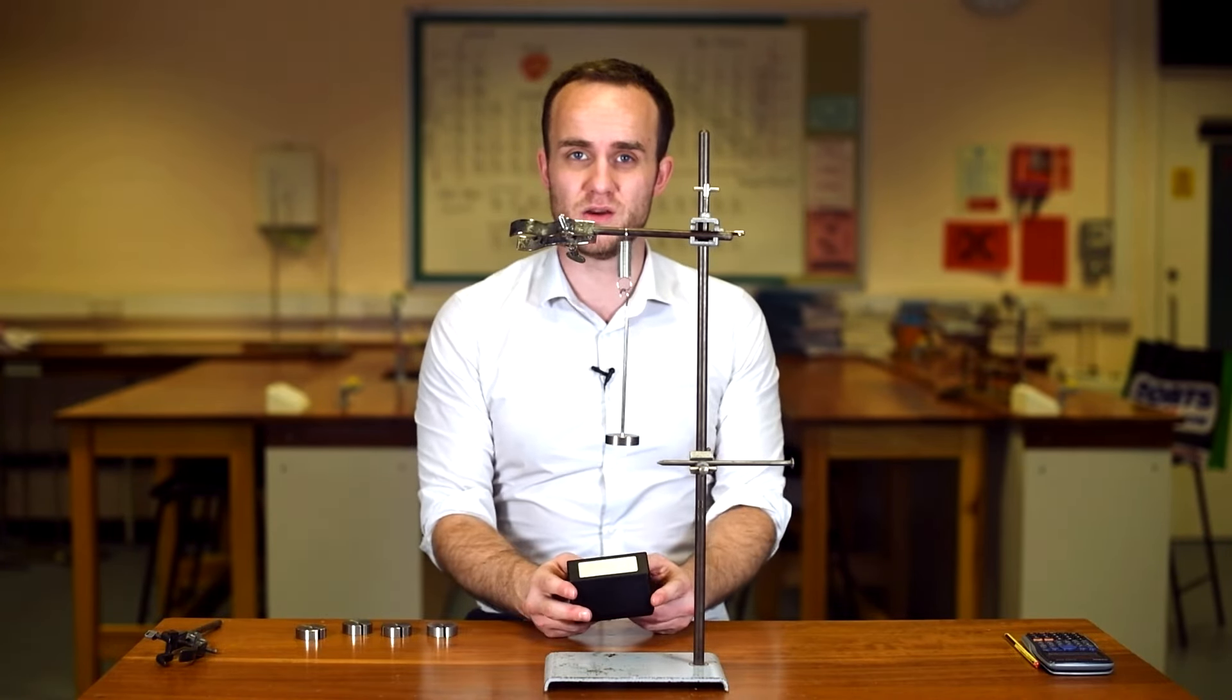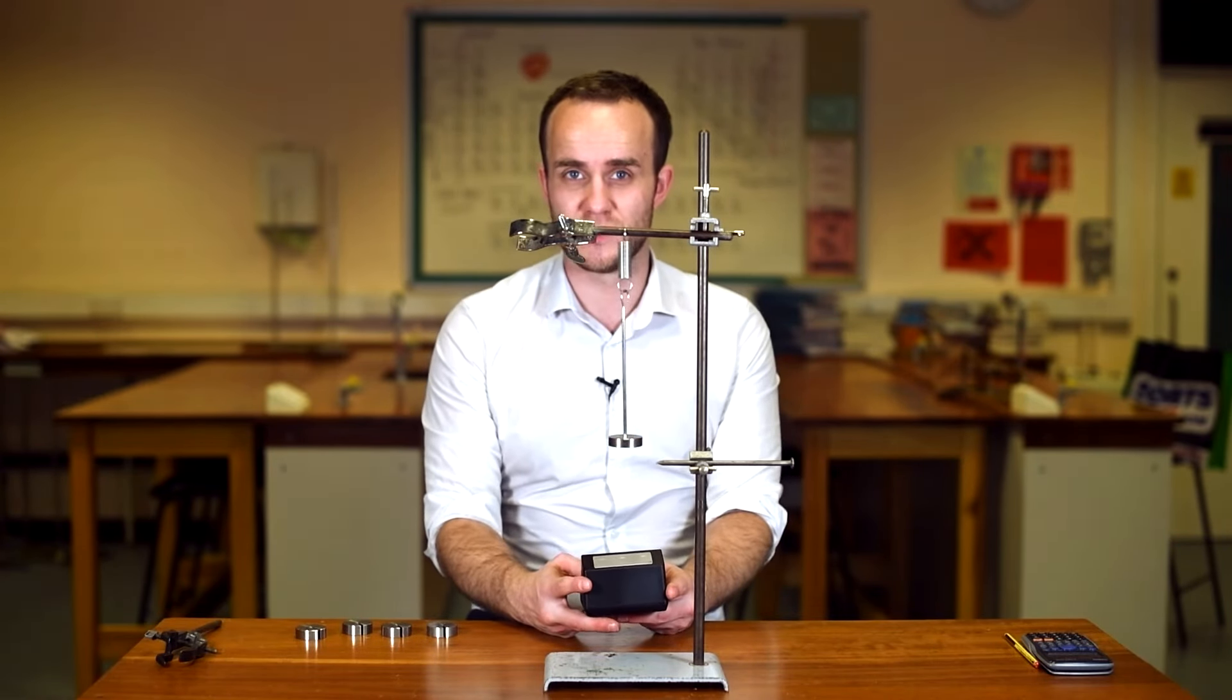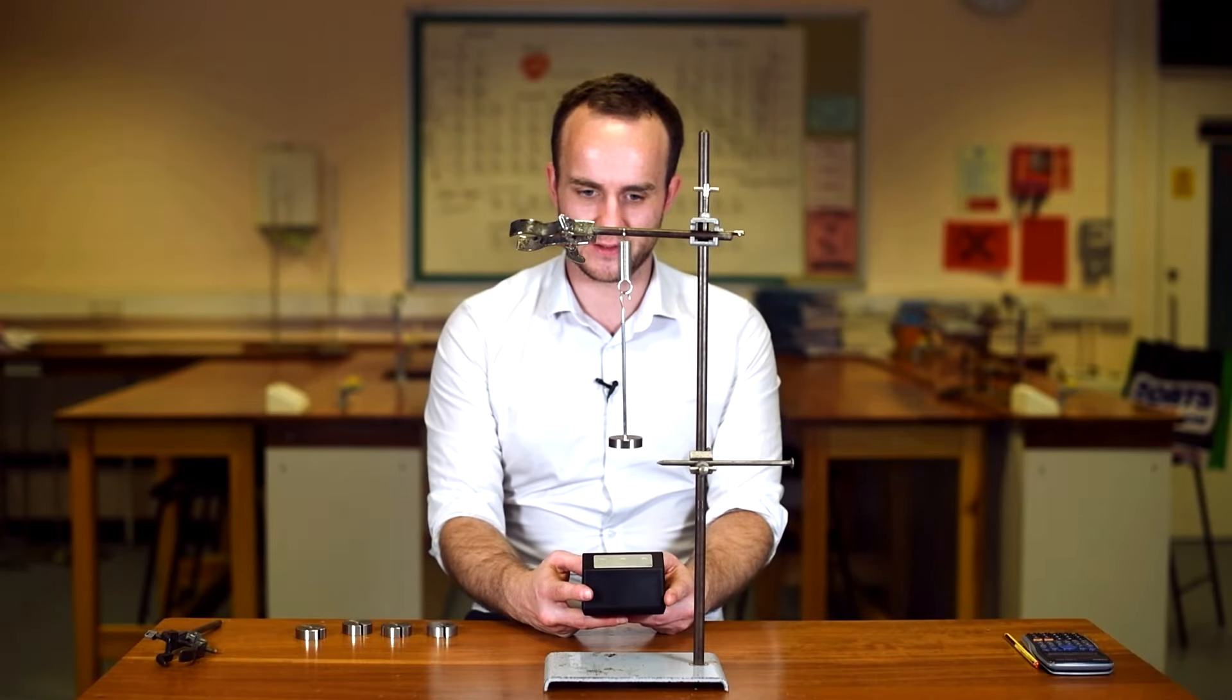So again, we're going to leave it go, and then we're just going to start the stopcock when it passes the fiducial marker. And then we're going to call that zero and count for 10 oscillations again. So starting now: 1, 2, 3, 4, 5, 6, 7, 8, 9, 10.